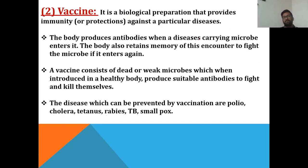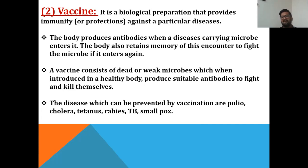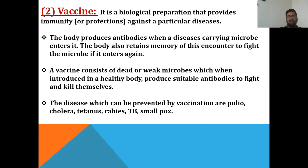The second medicinal use of microorganisms is to prepare vaccines. A vaccine is a biological preparation that provides immunity or protection against a particular disease. The body produces antibodies when a disease-carrying microbe enters it, and also retains memory of this encounter to fight the microbe if it enters again. A vaccine consists of dead or weak microbes which, when introduced into a healthy body, produce suitable antibodies. Diseases preventable by vaccination include polio, cholera, TB, and smallpox.